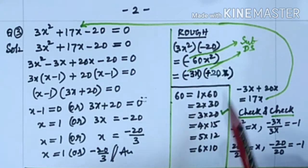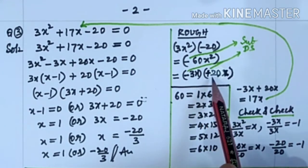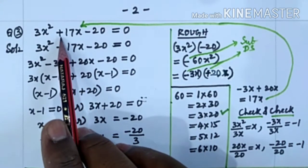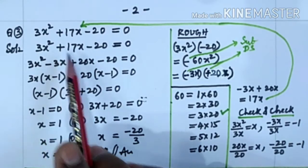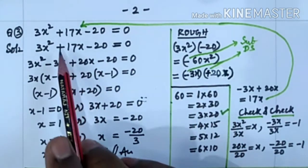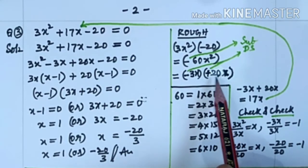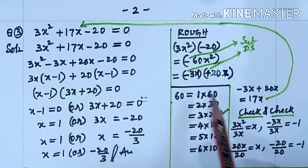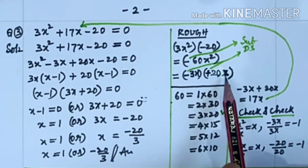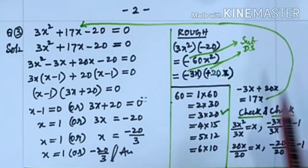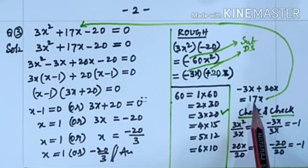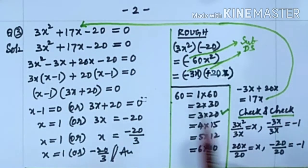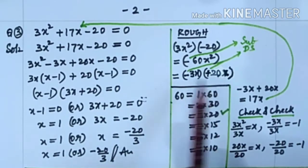3x and 20x. These two must be of different signs. Since we have plus sign here for 17x, the larger one should be positive. So plus 20x and minus 3x. Check: minus 3x into plus 20x is minus 60x². Minus 3x plus 20x is 17x — checked. Now we write minus 3x plus 20x instead of 17x.